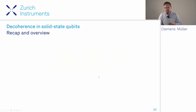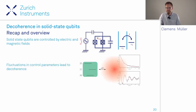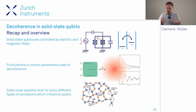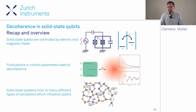To recap: solid state qubits—both semiconductor quantum dot and superconducting circuit types—are controlled by electric and magnetic fields, and fluctuations in those control parameters lead to decoherence. The solid state environment hosts many excitations that can manifest as fluctuations in qubit control parameters. I'll now show examples of how specific material fluctuations influence decoherence.